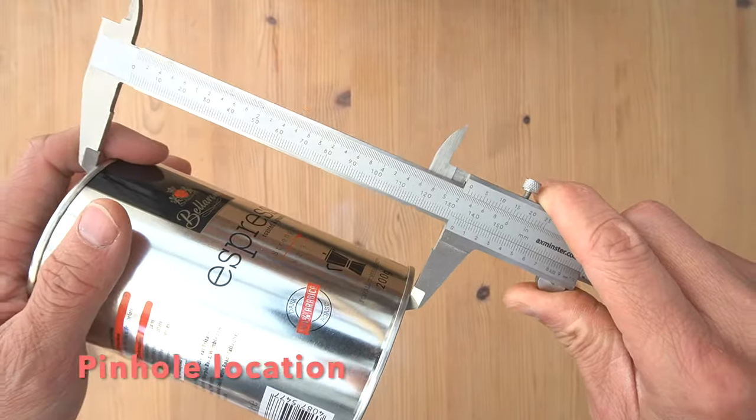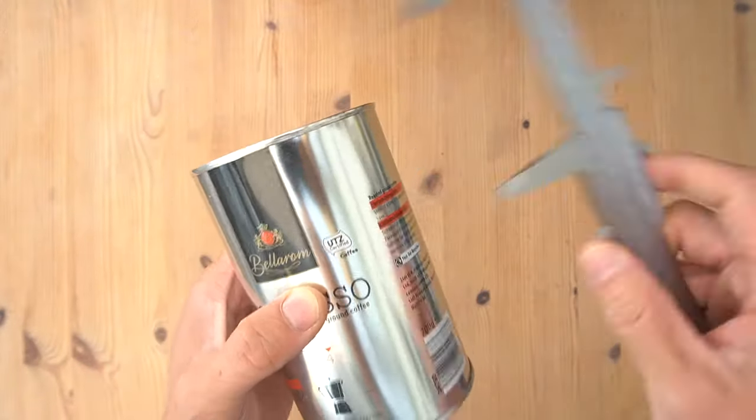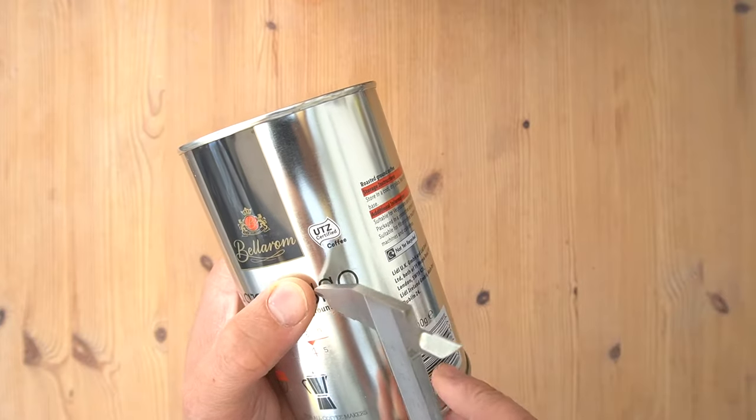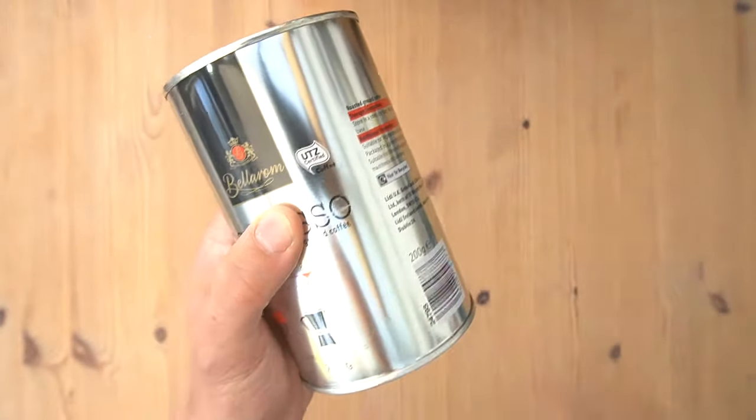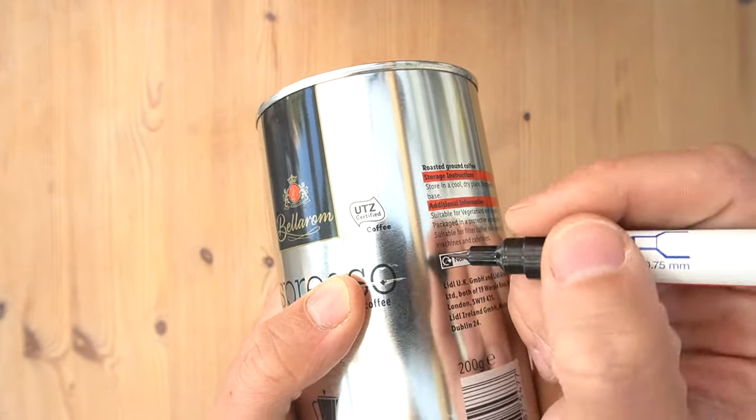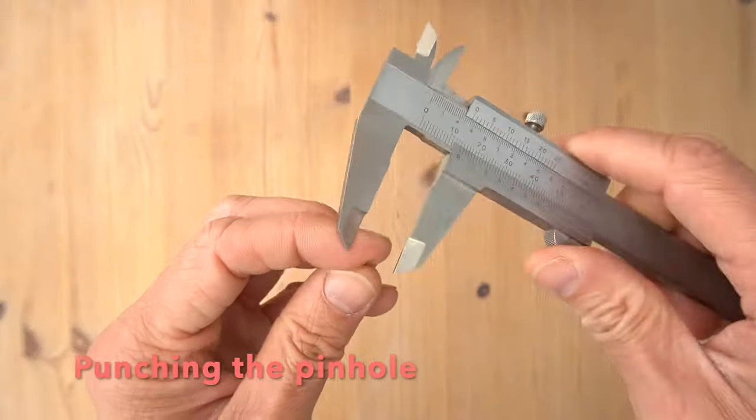Using a pair of measuring calipers, I measure the height of the tin and mark where the halfway point is so that I can scribe a rough location where the pinhole should be. This step is the trickiest and we have to pay special attention.